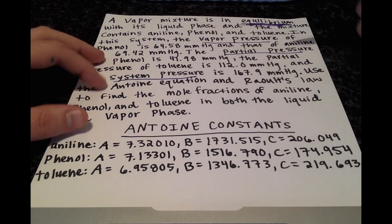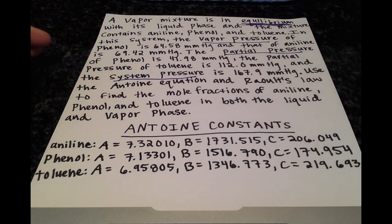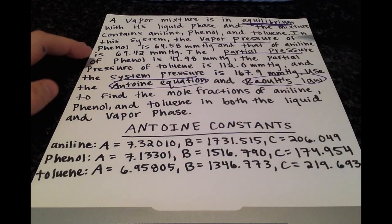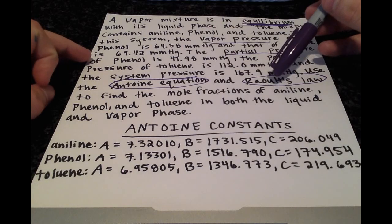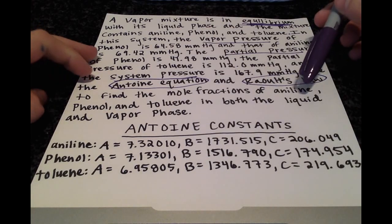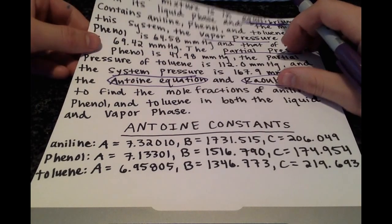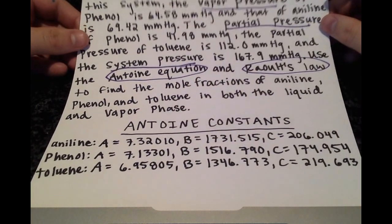And we're told, they give us a clue, you might not see this in every problem you do. They tell us to use the Antoine equation and Raoult's Law to find the mole fractions of each component in both the liquid and the vapor phases. And we have all these wonderful constants below.